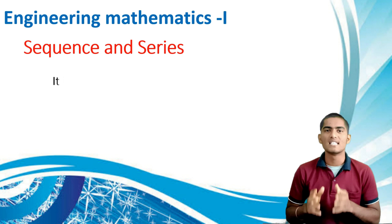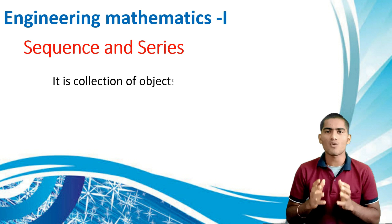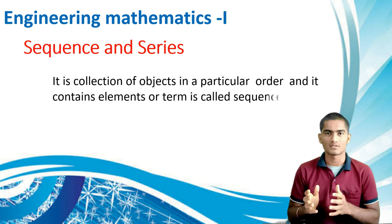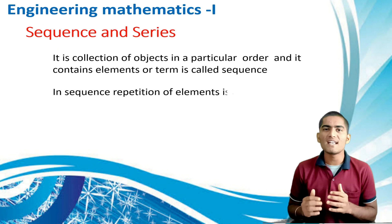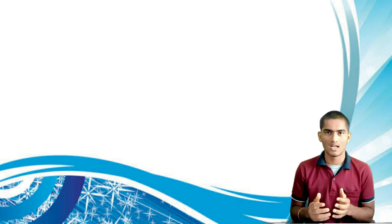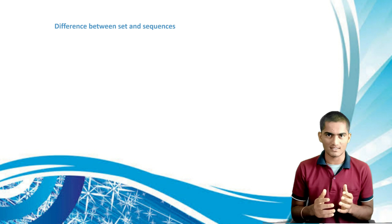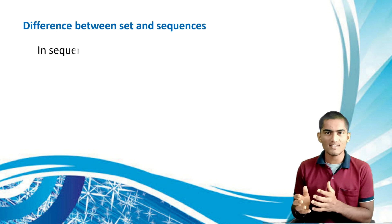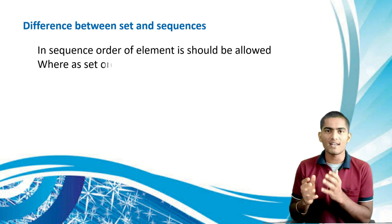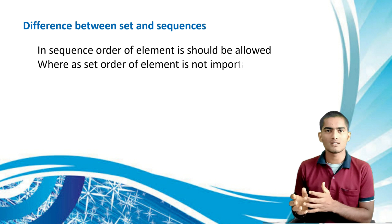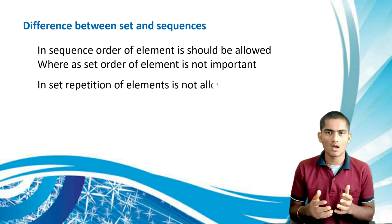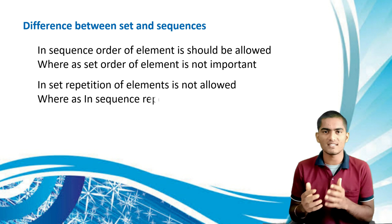A sequence is the collection of objects in a particular order, and it contains elements or terms. The repetition of elements is allowed, and it is denoted by lower brackets. The main difference between a set and a sequence: in a sequence the order of elements matters and repetition is allowed, whereas in a set, neither order nor repetition is considered.